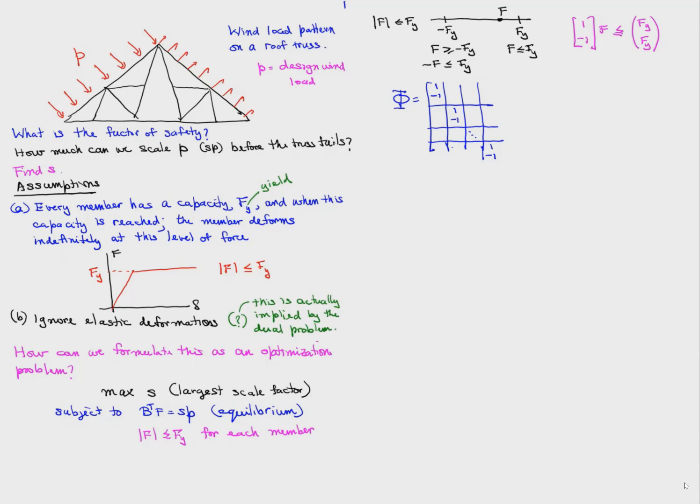So these capacity constraints we can assemble for all the members of the truss by forming this matrix phi with the 1 minus 1 in the block diagonal, and the Fy for each member we'll call the capacity vector. So if we write phi times F less than or equal to C, that is the capacity constraint for all the members.